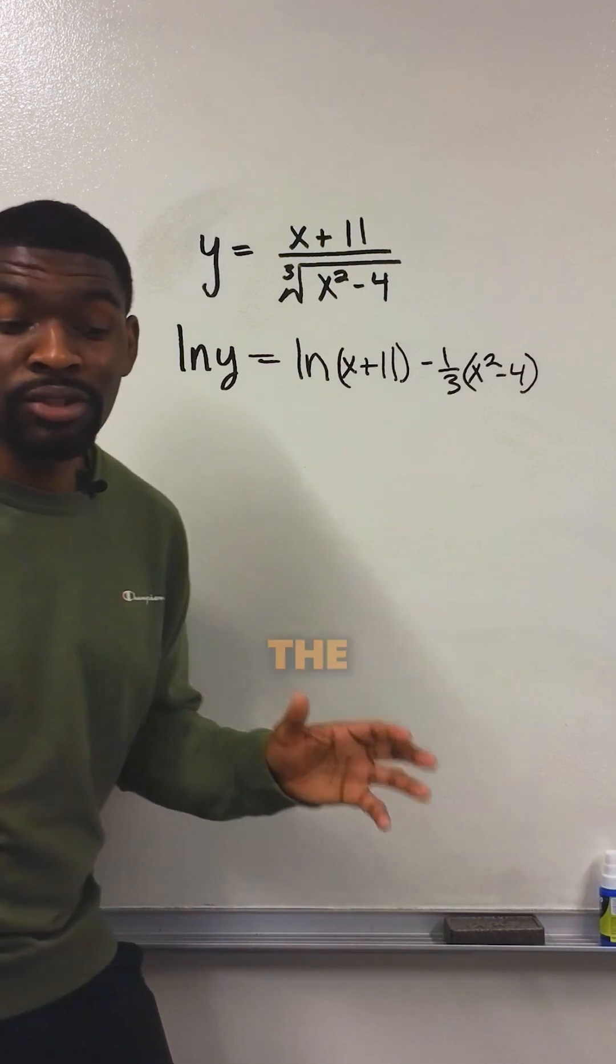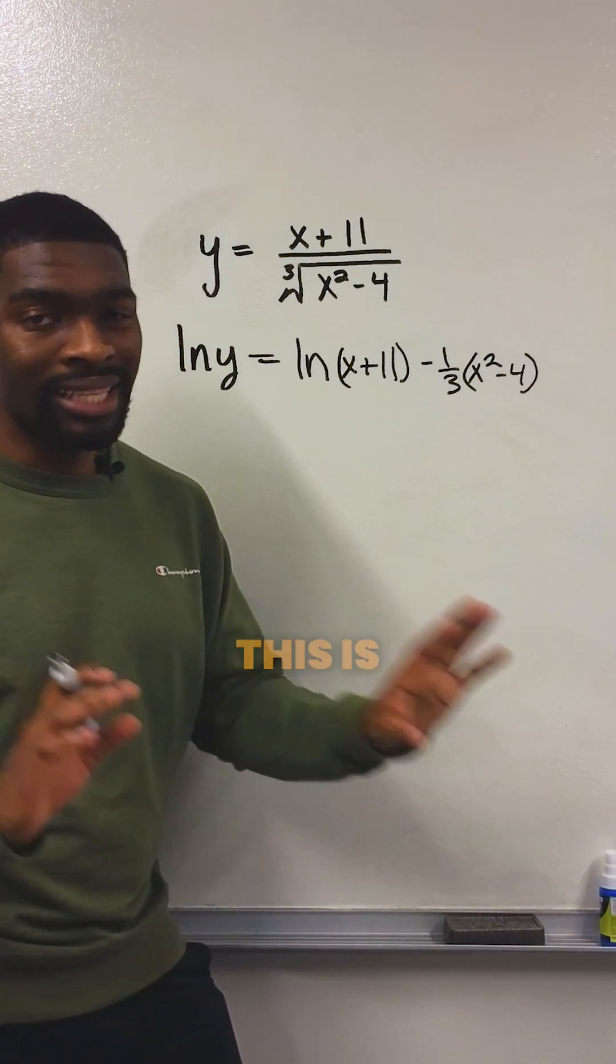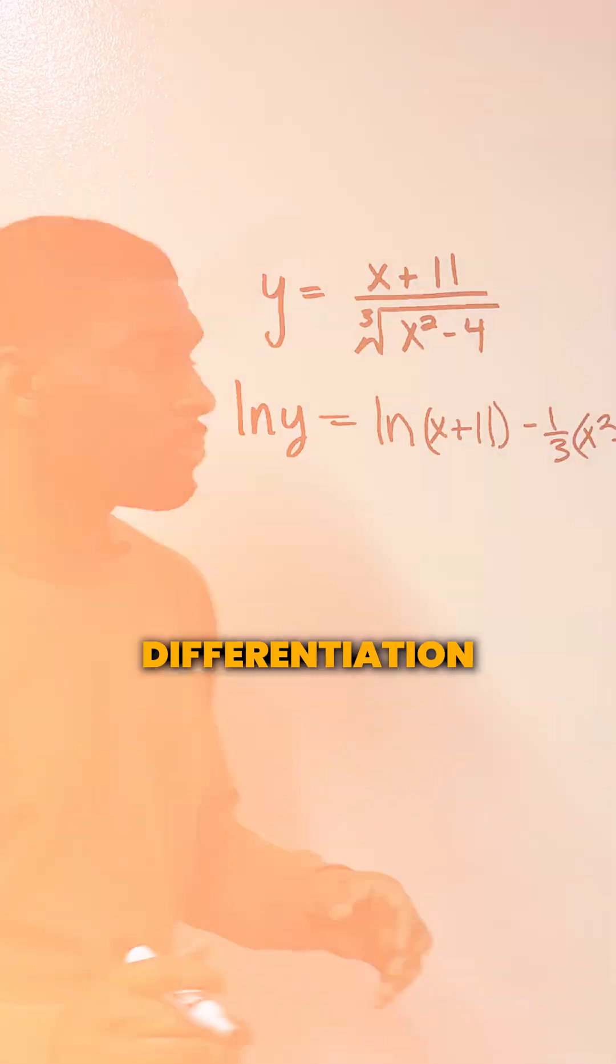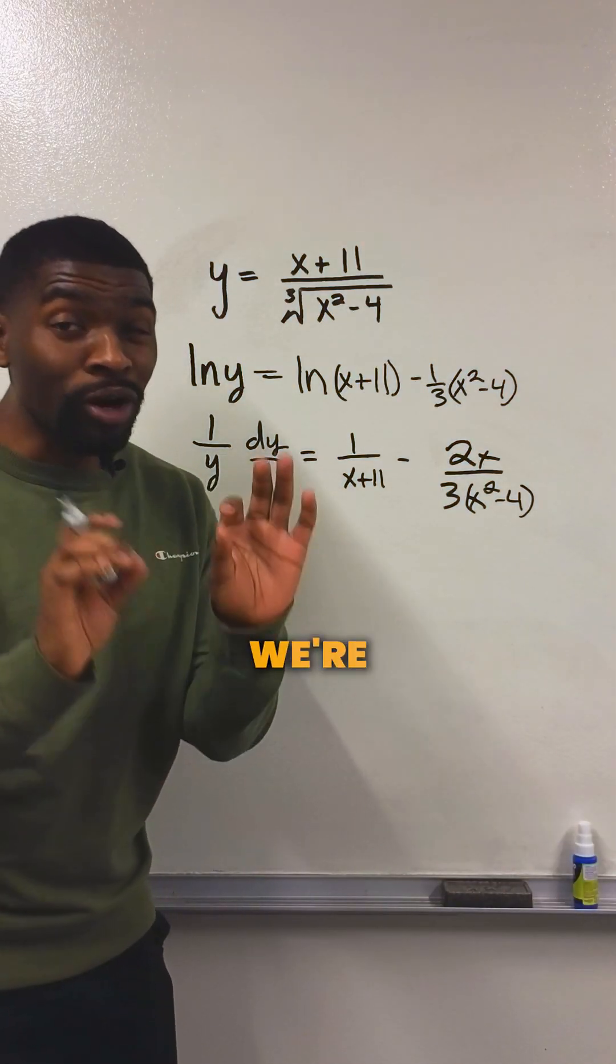To finish this problem, we're going to take the derivative of both sides. So this is what that would look like, and it's very similar to implicit differentiation. Now, at this point in our problem, we're almost done,